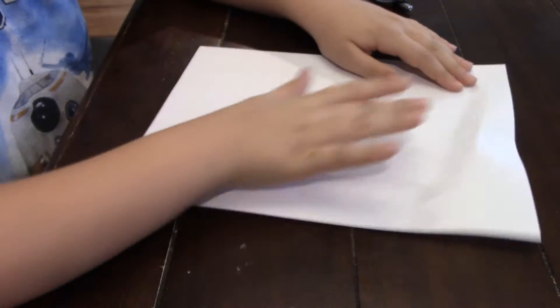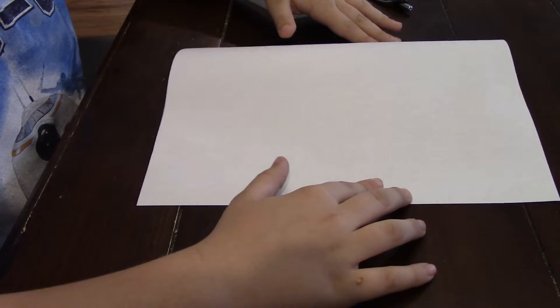You're going to start off with a piece of regular paper. I'm using a piece of regular printer paper. You're going to start with the long side this way and short side up and down. Okay, let's get folding.